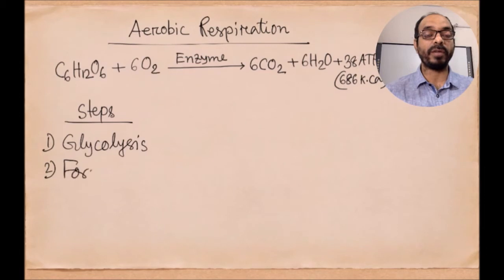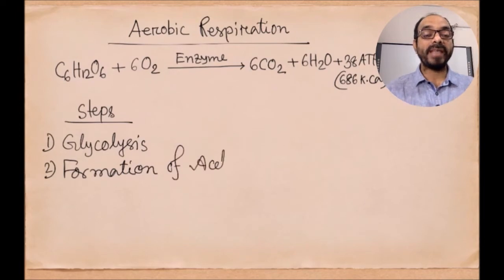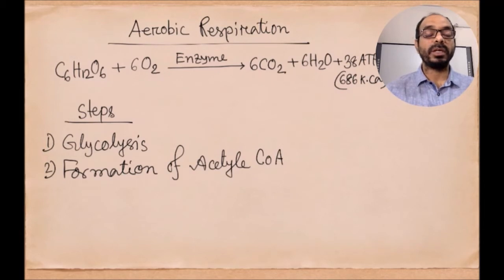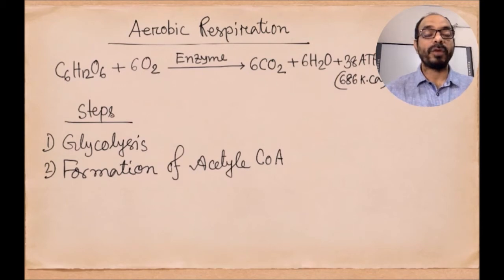The second step of aerobic respiration is the formation of acetyl coenzyme A. In this step, two molecules of pyruvic acid — the three-carbon compound — are converted into two molecules of acetyl CoA, a two-carbon compound. From two molecules of pyruvic acid, two molecules of carbon dioxide are also released in this process.